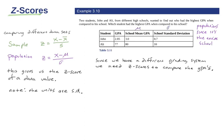We do have the school mean, which is mu, and the school standard deviation, which is sigma. When we're applying the formula, we're just subtracting from the mean over the standard deviation. Technically, we are talking populations here.